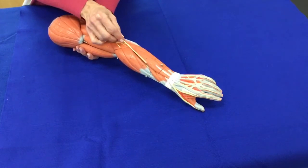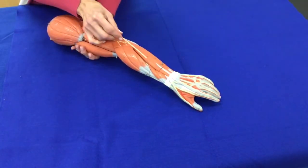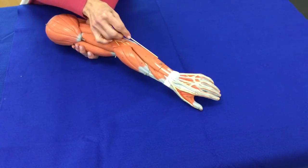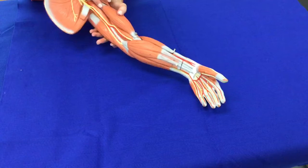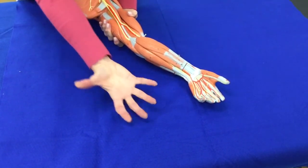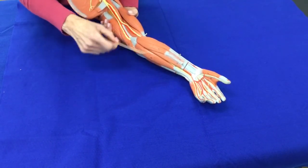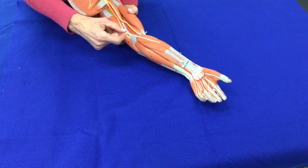This muscle group when it contracts will open the hand and so this is called the hand extensor group. And if we flip to the other side this muscle when it contracts will close the hand into a fist and this is called the hand flexor group.